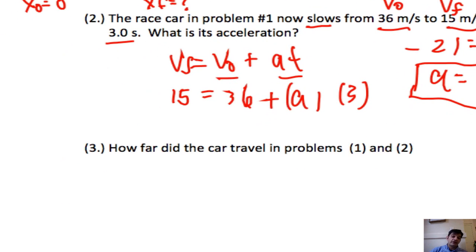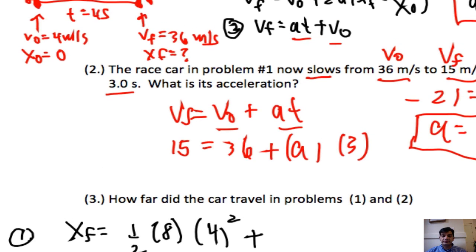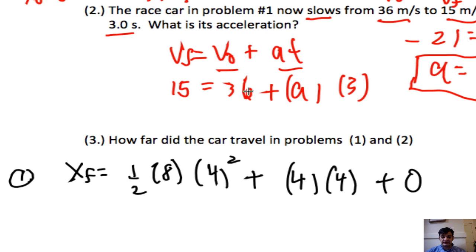So for number 3, it says how far did the car travel in problems 1 and 2. So let's go ahead and solve this one. So I've got several equations I could use. So I know that X final, I don't know what it is, is 1 half. So we're just going to do this for the first problem, just get how far it travels. So X final equals 1 half times, I've solved for the acceleration, just 8 times the time squared, which is 4 squared plus, do I have an initial speed? Yes, I do. It's 4 times 4 plus my initial position, oh, plus my initial position, which I'm just going to say is 0, which we have labeled in the picture.